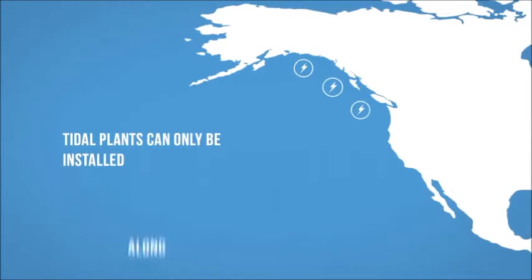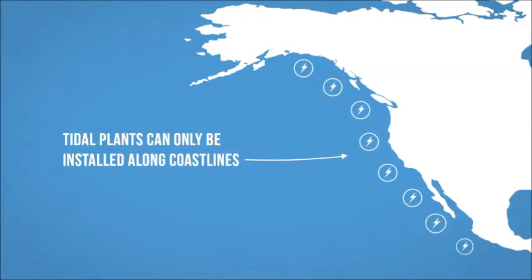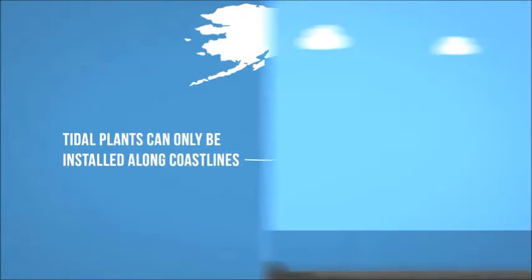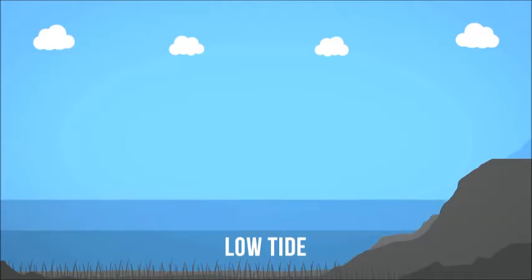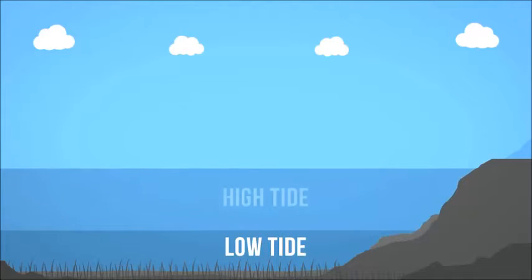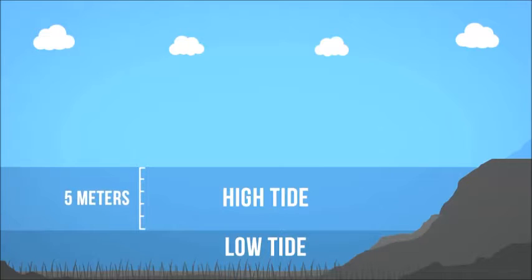Tidal plants can only be installed along coastlines. Coastlines often experience two high tides and two low tides on a daily basis. The difference in water levels must be at least five meters high to produce electricity.